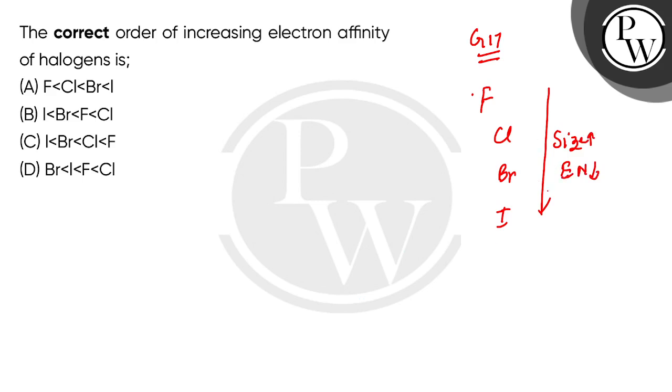Then electron gain tendency for iodine is the lowest, and size is also greatest. So in the last shell the attraction from nucleus will also be lowest, so electron affinity of iodine is lowest. Bromine is also similar.